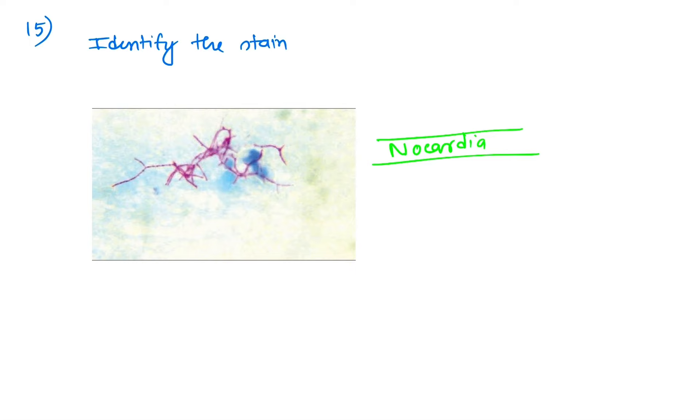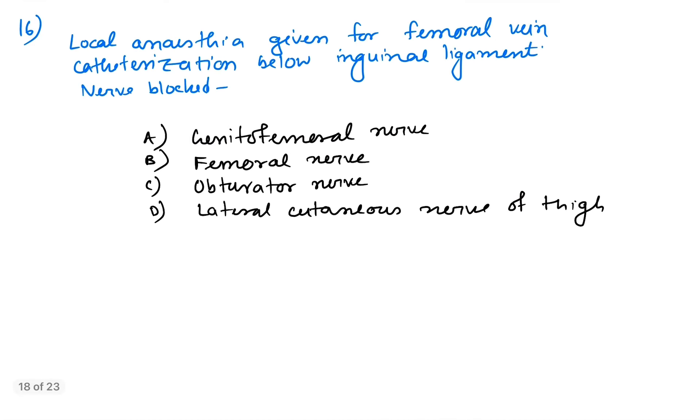All of you know Nocardia is acid-fast, so the staining done is a very popular stain, the Ziehl-Neelsen stain, showing Nocardia species. Question number 16: local anesthesia given for femoral catheterization below the inguinal ligament.